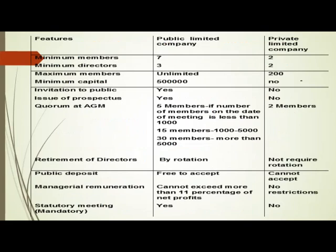Now, what are the differences between a public company and a private company? On the basis of certain criteria we can distinguish them. First: minimum members — a public company requires seven and a private limited company requires two. Minimum directors: a public company requires three, whereas a private company requires two. Maximum members is limited to 200 for a private company, but in the case of a public company it is unlimited. Invitation to the public is applicable for a public company but not for a private company.